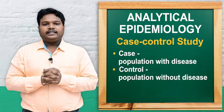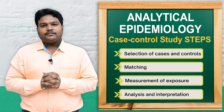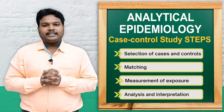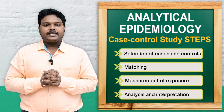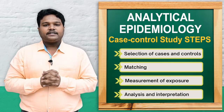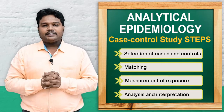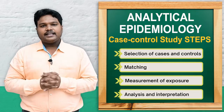The steps of case control studies are: first, selection of cases and controls from the population; second, matching and measurement of the population or exposure; third, measurement of exposure; and fourth, analysis and interpretation.